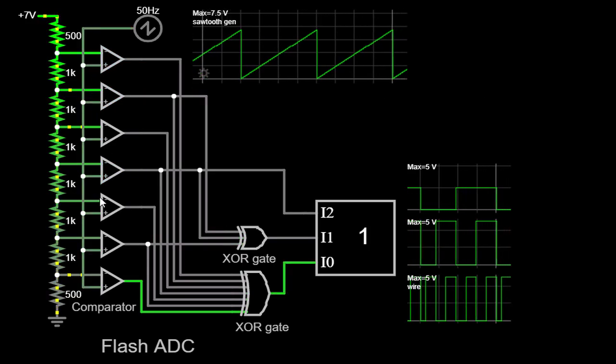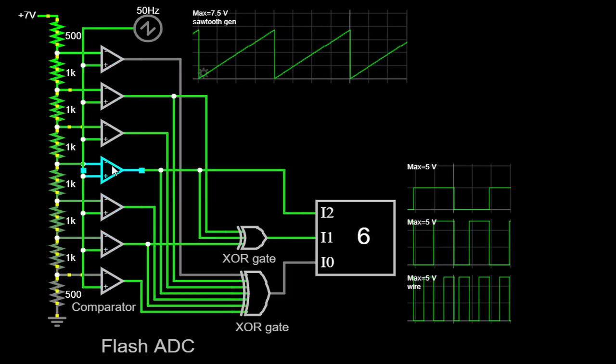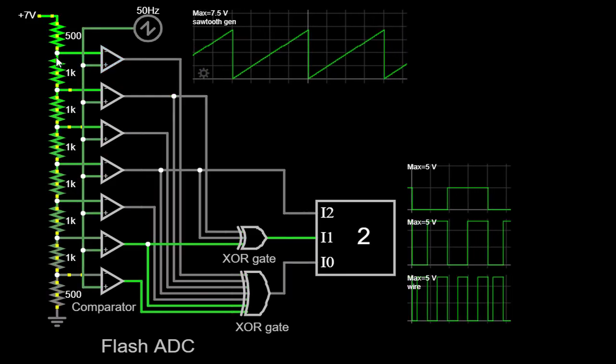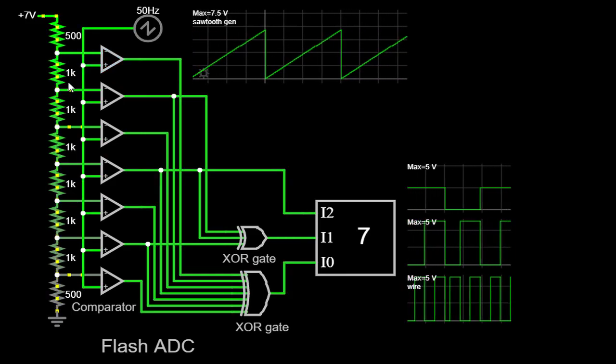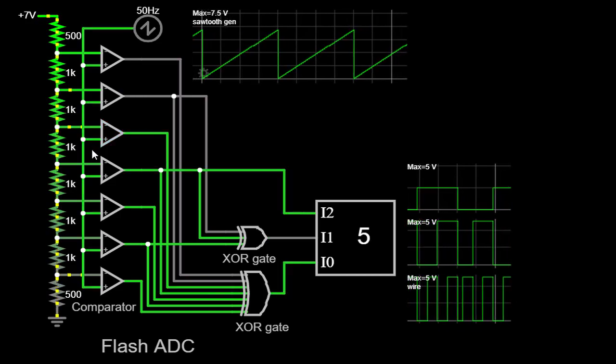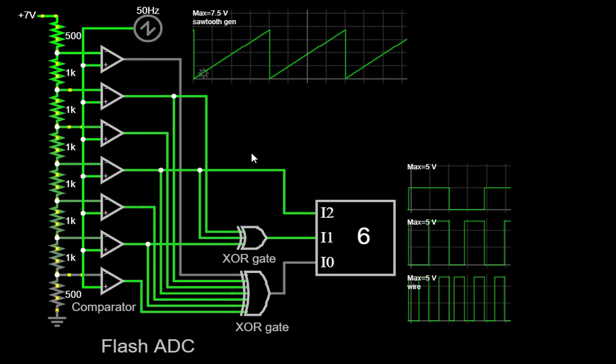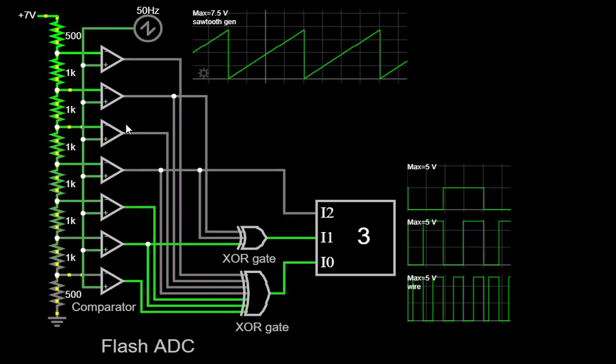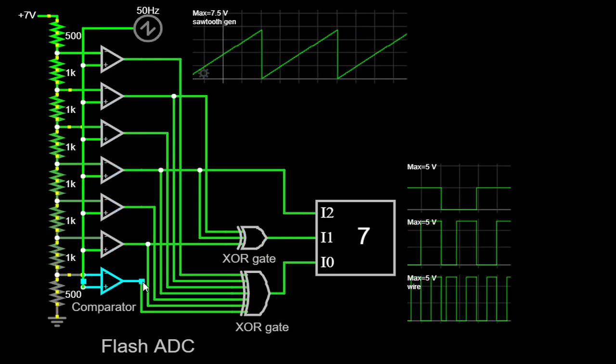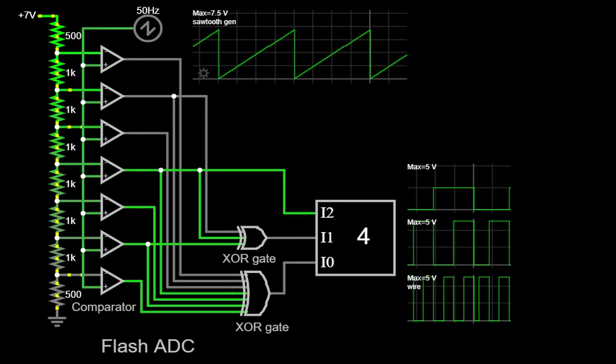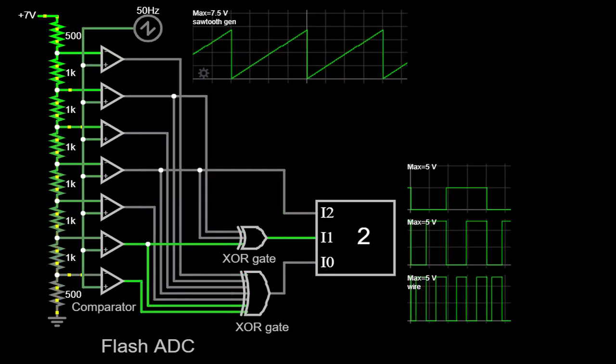This design utilizes a series of comparators, with each comparator comparing the input voltage to a unique reference voltage. The outputs of these comparators are then encoded to generate a digital representation of the input voltage. The primary advantage of a Flash ADC is its remarkable speed, making it an ideal choice for applications that require rapid analog-to-digital conversion.